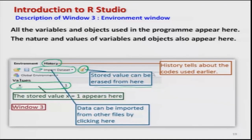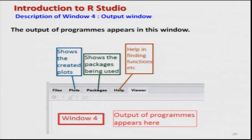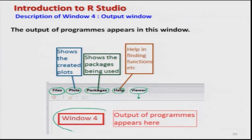Now I come to Window 4. You can see there are different icons: File, Plots, Packages, Help, and Viewer. As soon as you click on Viewer, whatever is the outcome of your program — say any graphics or numerical values — will appear in Window 4. I will demonstrate this with a simple example. The Help menu helps in finding details about a function or anything you want to know in R. The Packages icon shows what packages are being used in this session.